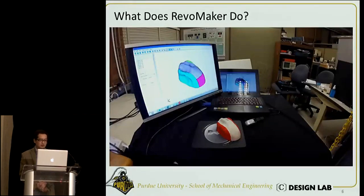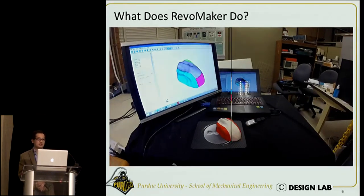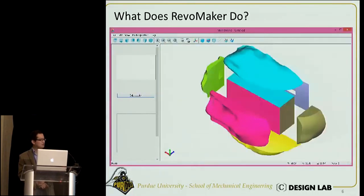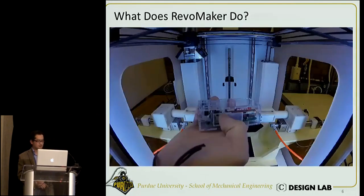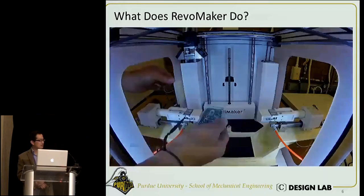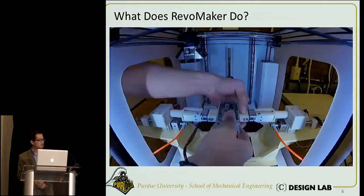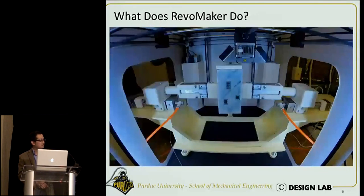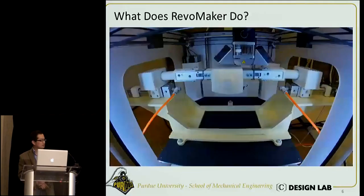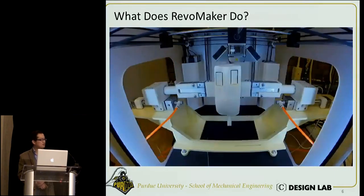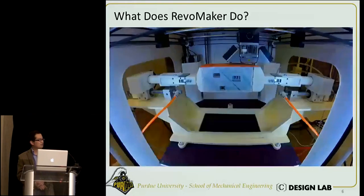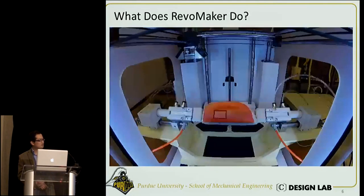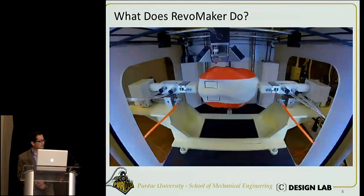So what does RevoMaker do? In this example, we print a user-customizable mouse. We generate a cuboid inside the mouse and separate the model into six pieces. We put all the functional components inside this cuboid and put it into the printer. After two rounds of revolving and printing, we can have a mouse, and we even print a side button.